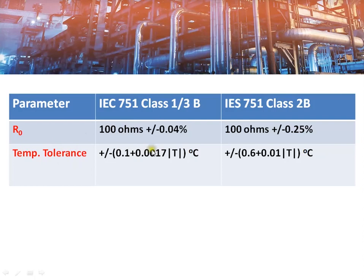This table shows the other classes as per IEC 751 standard and their tolerance parameters. If your application requires high accuracy, you should go for Class A or Class 1/3 B. If your application requires a high range — meaning you are going to measure higher temperatures and lower accuracy is acceptable — then you can go for Class B or Class 2B.